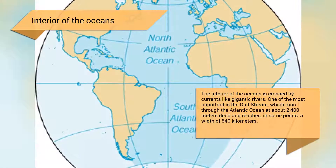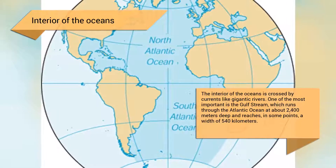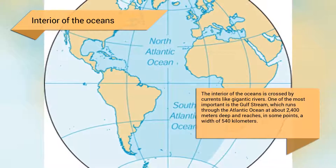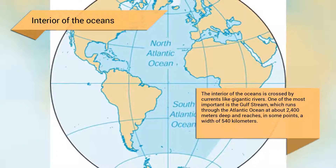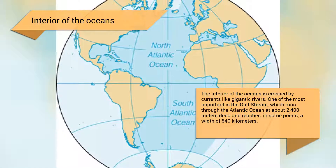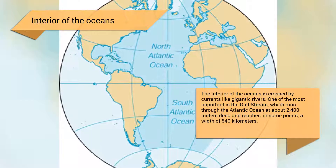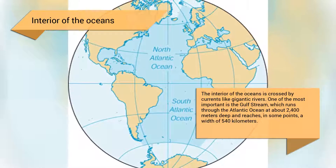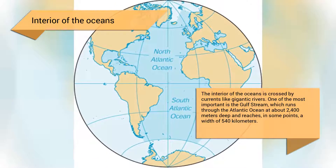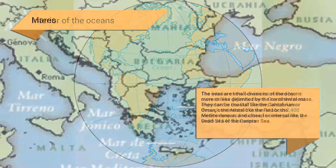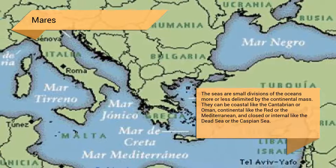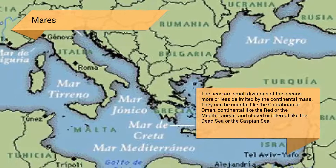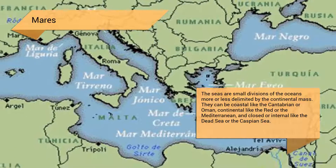The interior of the oceans is crossed by currents like gigantic rivers. One of the most important is the Gulf Stream, which runs through the Atlantic Ocean at about 2,400 meters deep and reaches in some points a width of 540 kilometers.